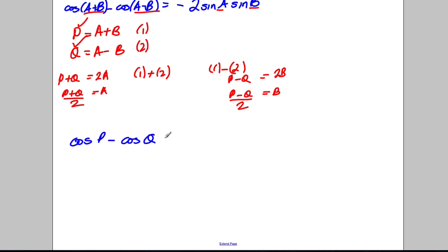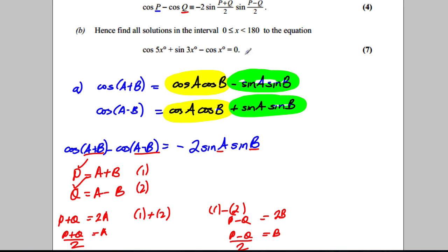So I can write that cosine P take away cosine Q is equal to negative 2 sine of (P+Q)/2, not cosine, another sine, sin(P-Q)/2. And let's take a look, that's exactly what we wanted here and we've got it.